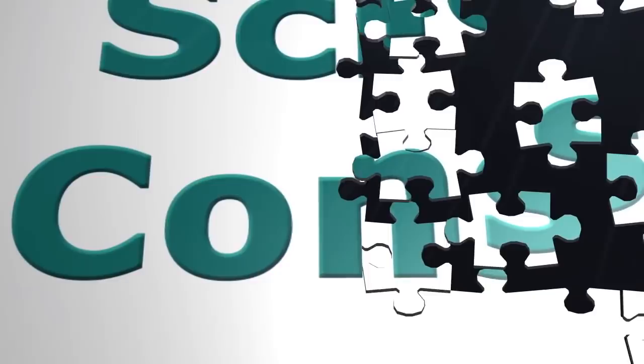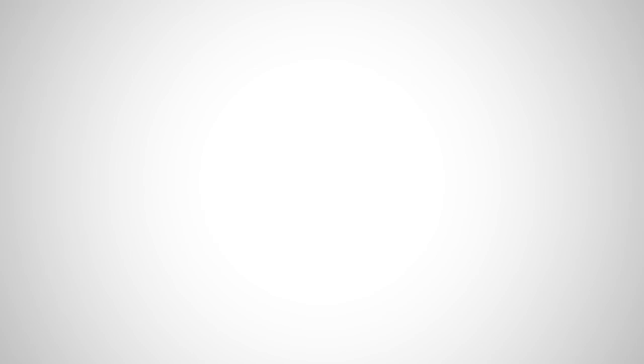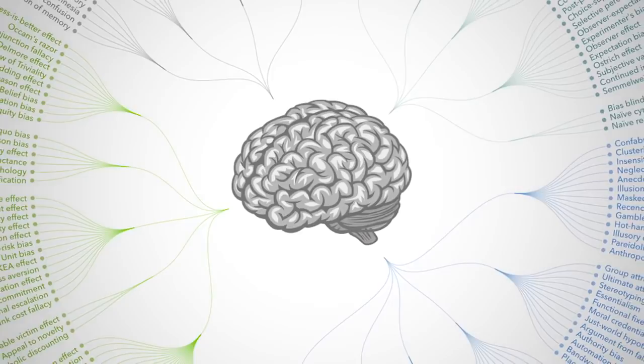These are just some of the cognitive traps we often fall victim to that provoke science denialism. In many ways, these biases are the base state for humans. We're emotional creatures by default, and scientific skepticism is something we must learn to help overcome this. The first step is to recognize these biases in effect. In relation to science denialism, there are many common patterns and attributes to look for in detecting it. Join me in the next video to explore the features of science denialism and how to recognize them.